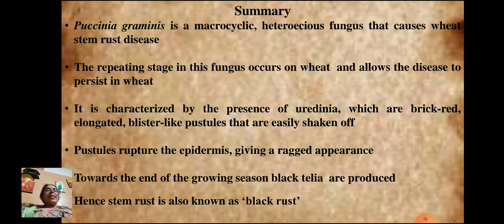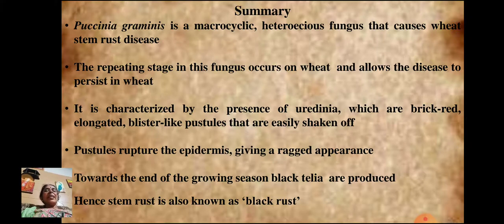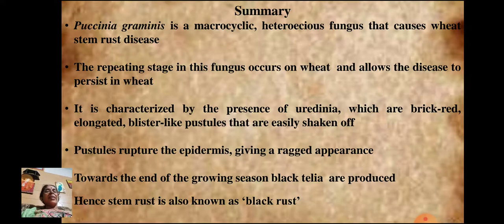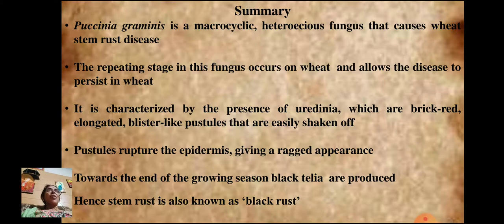To summarize, Puccinia graminis is a macrocyclic, heteroecious fungus that causes wheat stem rust disease. The repeating stage occurs on wheat and allows the disease to persist, characterized by uredinia — brick-red, elongated, blister-like pustules that easily rupture the epidermis. Towards the end of the growing season, black teliospores are produced, hence the name 'black rust.' In this video, we have studied the uredial stage, characterized by uredospores (also called repeating spores) that reinfect the same wheat plant and spread the disease.